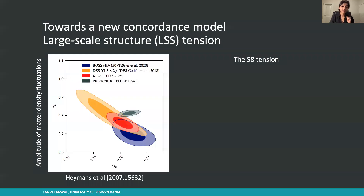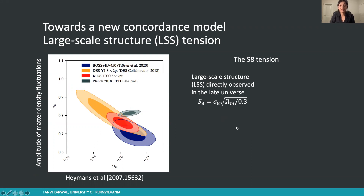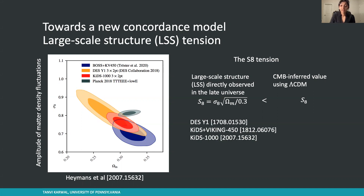We have the amplitude of matter density fluctuations, sigma eight, versus the amount of matter in the universe. We have several different measurements on this 2D plane, including from the CMB in green and in yellow, red, and blue through late universe measurements — either weak lensing measurements or galaxy cluster counts. The S8 tension arises between these two measurements, where the CMB-inferred value is over-predicting the amount of matter density fluctuations in the universe. A huge effort has been mounted to measure this, and as measurements have become more precise, the tension has grown.